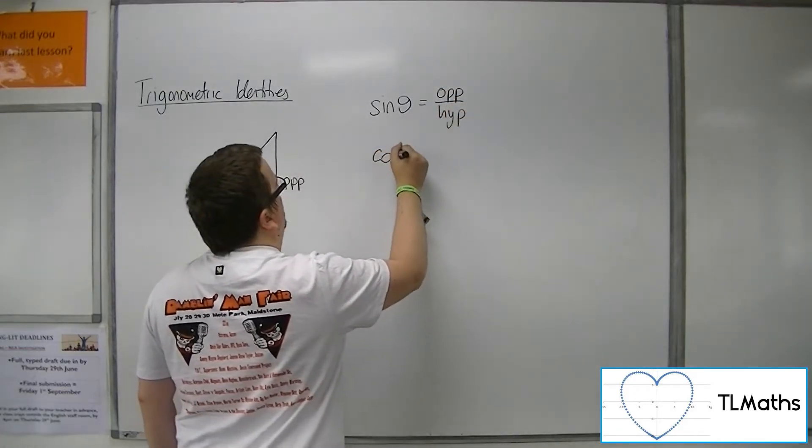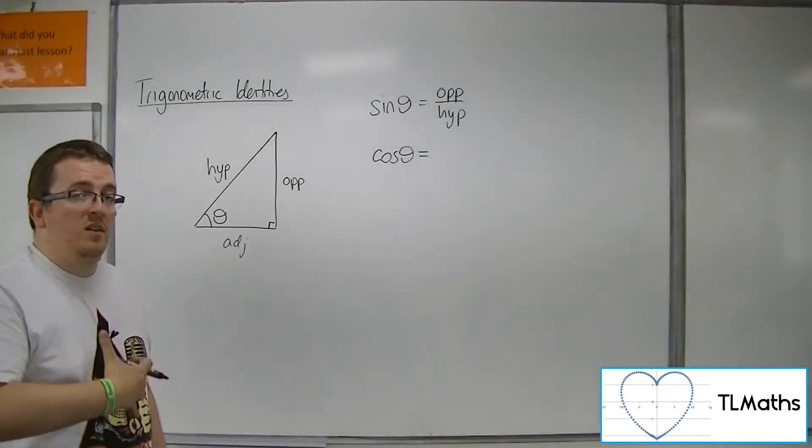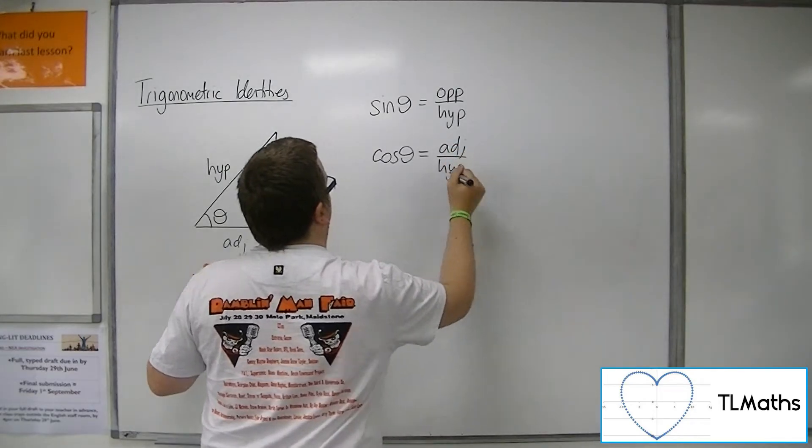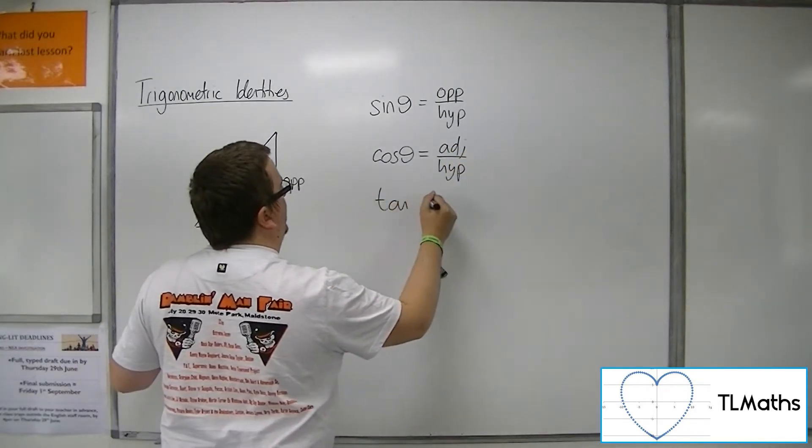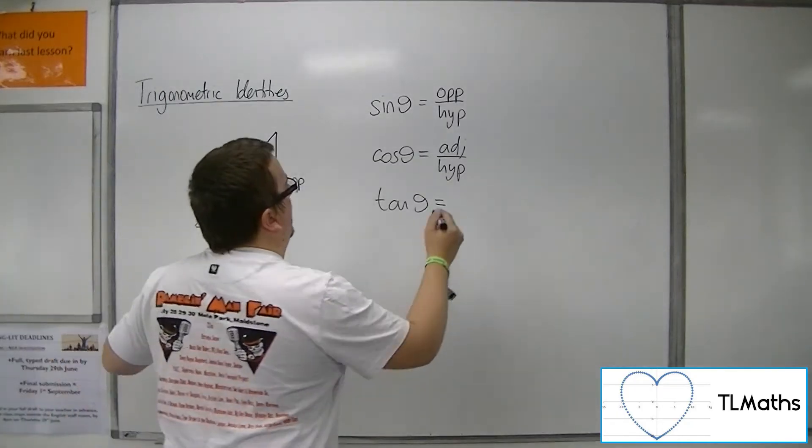I also know that cosine of theta represents the trigonometric ratio of the adjacent over the hypotenuse. And tan of theta represents the trigonometric ratio of the opposite over the adjacent.